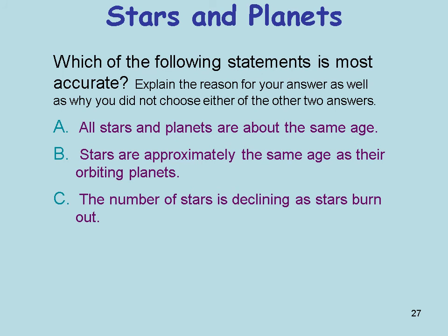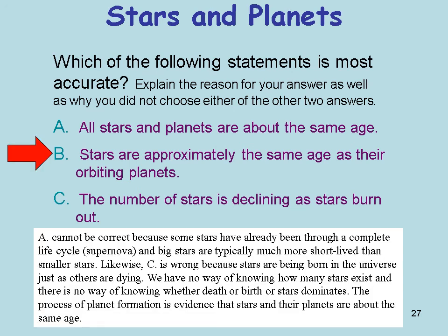Which of the following statements is most accurate? The best answer is that stars are approximately the same age as their orbiting planets. The statement that all stars and planets are the same age cannot be correct because some stars have already completed a full life cycle — supernova. And saying we have no way of knowing how many stars exist is incorrect because stars are being born just as others are dying. The process of planet formation is evidence that stars and their planets are about the same age.